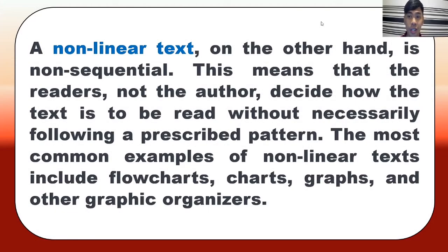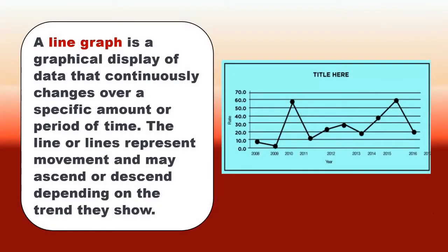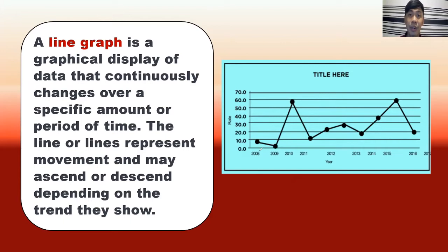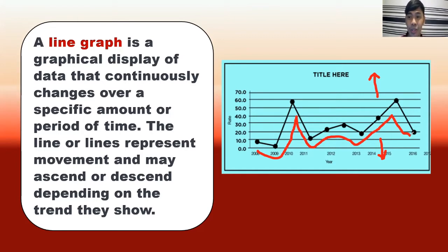Common examples include flowcharts, charts, graphs, and other graphic organizers. A line graph is a graphical display of data that continuously changes over a specific period of time. The line or lines represent movement and may ascend or descend depending on the trend they show. From the word itself, the graph is presented by lines — it can be ascending, going upward, or descending, going downward, following a trend.